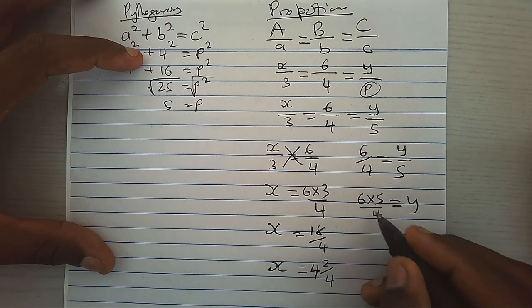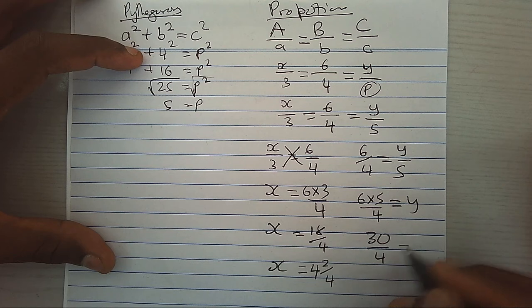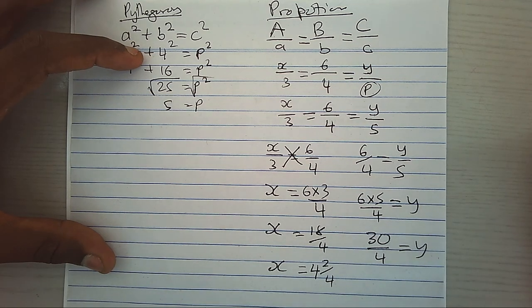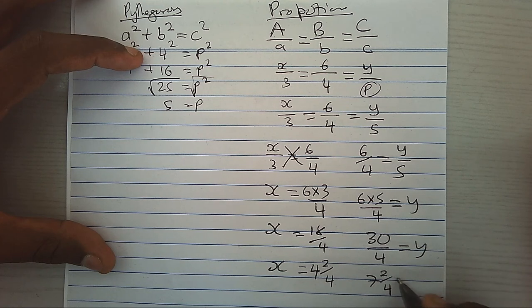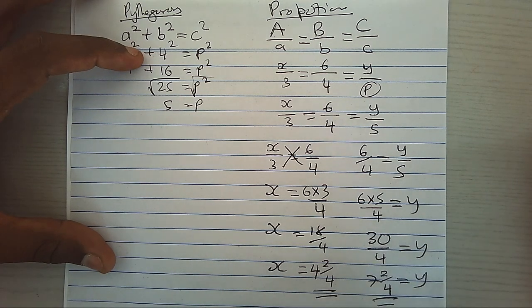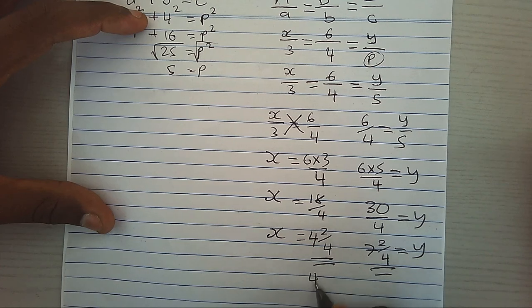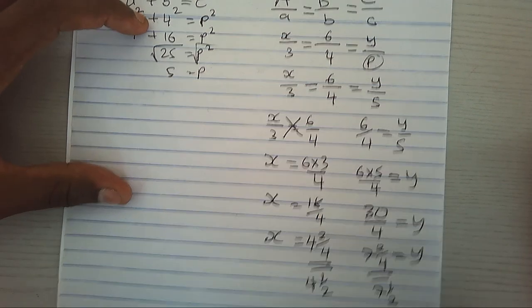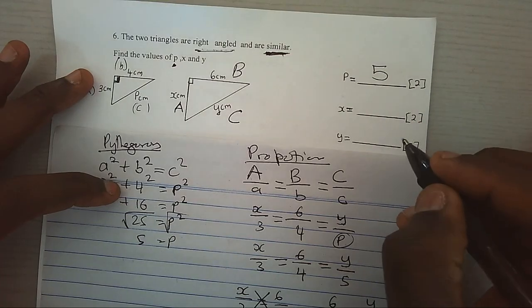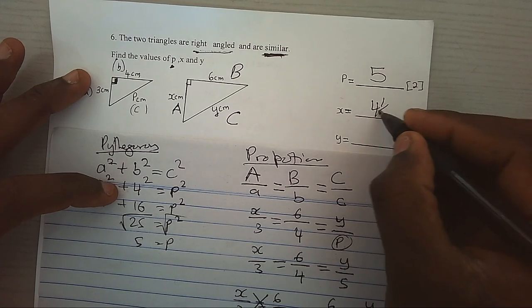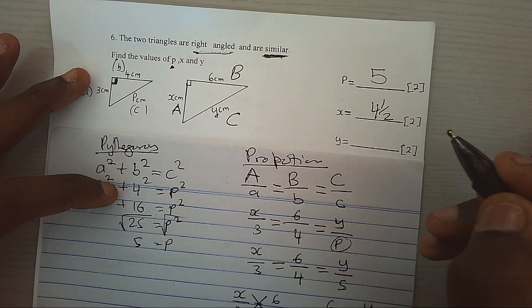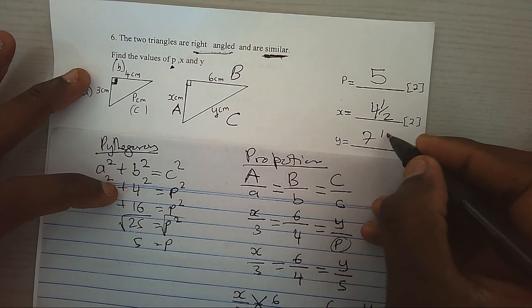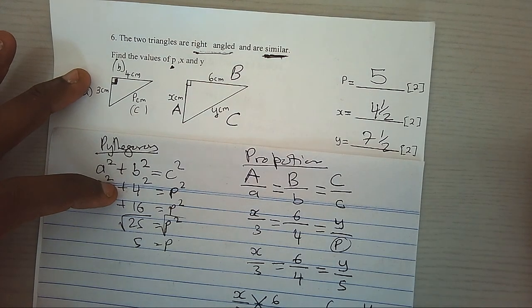And for Y, it will be 30 over 4, which will give us 7 and 2 over 4. And this will be our answer. However, we can simplify this to 4 and a half and 7 and a half. Hence, we shall obtain the value of X as 4 and a half and the value of Y as 7 and a half.